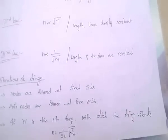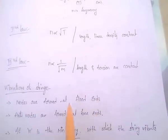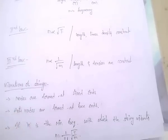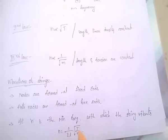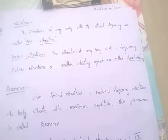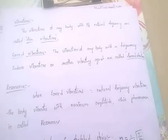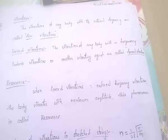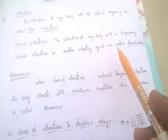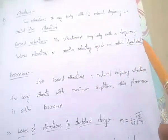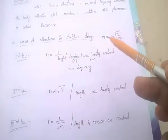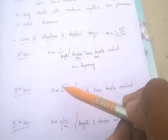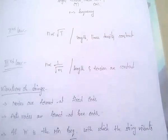Nodes are formed at the fixed ends and antinodes at the free ends. The minimum frequency at which the string vibrates is n = 1/(2l) × √(T/m). In summary: n is inversely proportional to length, proportional to square root of tension, and inversely proportional to square root of linear density.